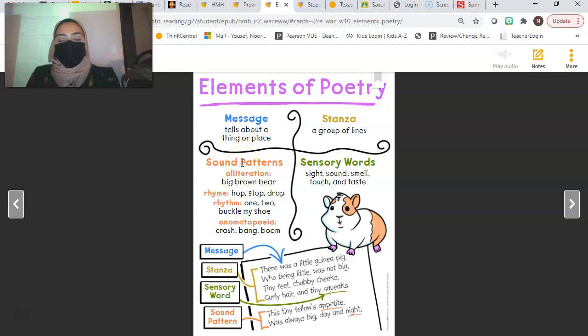Sound patterns in poems could be things such as alliteration. Remember, we went over this. Alliteration means words that all start with the same letter, like big, brown, bear. Sound patterns also include rhymes, like rhyming words. Hop, stop, drop.